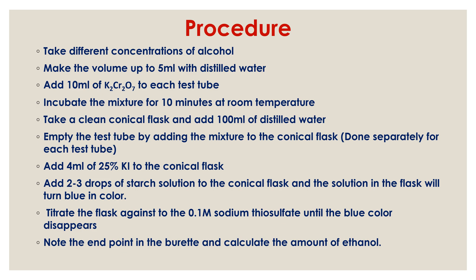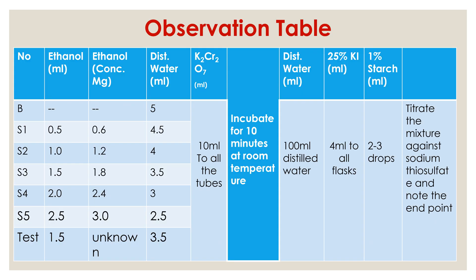Here is an observation table. The columns include: number, ethanol in ml, ethanol concentration in mg, distilled water in ml, potassium dichromate in ml, incubation time, distilled water in ml, 25% potassium iodide in ml, 1% starch in ml, and titration values. I have taken five test tubes named S1, S2, S3, S4, S5, along with a blank and a test sample. The blank does not contain ethanol.